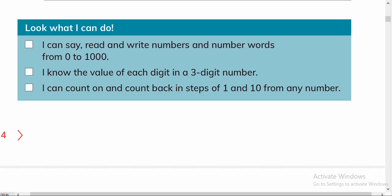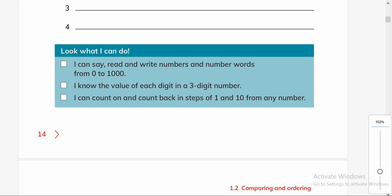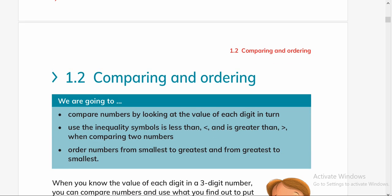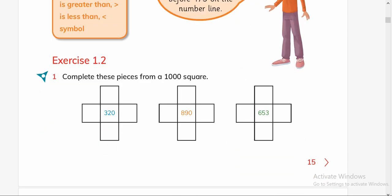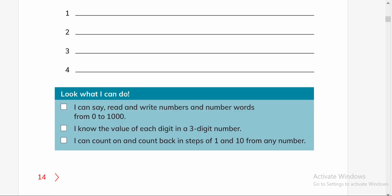Now look at what I can do: I can say and read numbers up to one thousand. Ask your students: can you say or write numbers up to one thousand? Do you know the value of three-digit numbers? Can you count forward and backward from zero to one thousand? We will do the rest of the pages in my next video. See you next time!